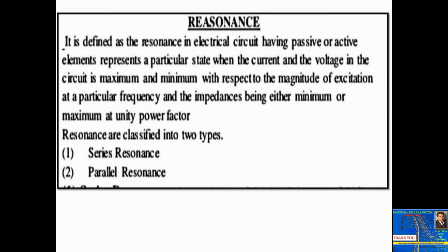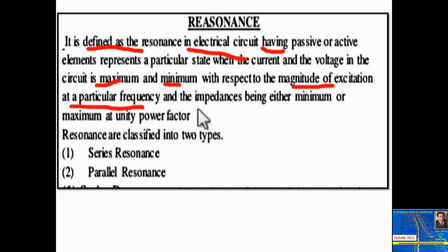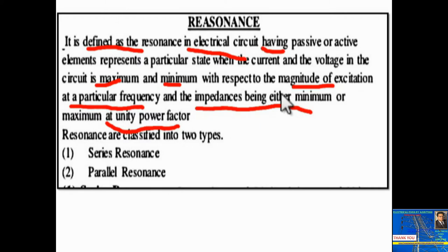So what is resonance? Resonance in an electrical circuit having passive and active elements represents a particular state when the current and voltage in the circuit is maximum or minimum with respect to the magnitude of excitation at a particular frequency, and the impedance is either minimum or maximum at unity power factor. This is the definition of electrical resonance.